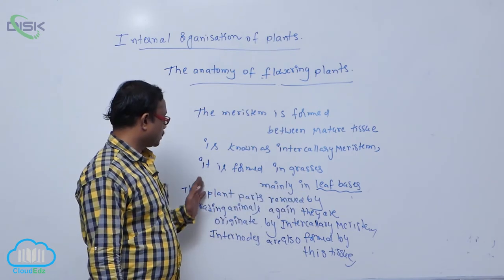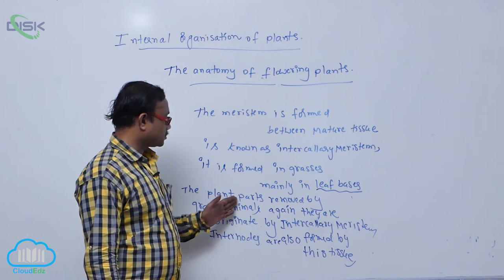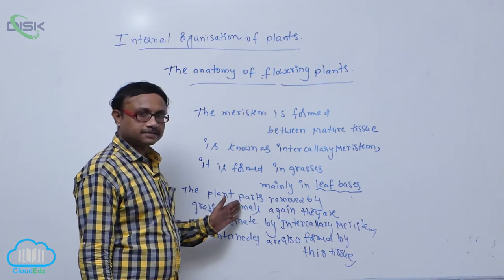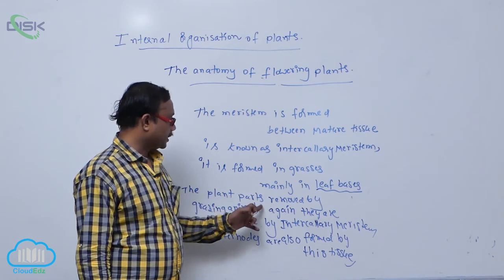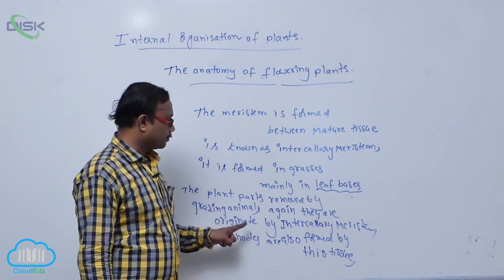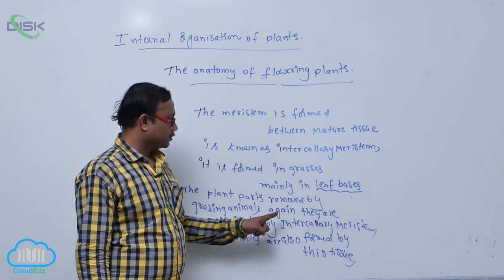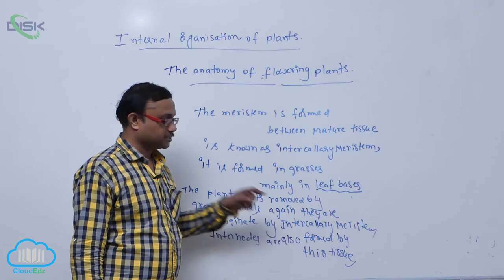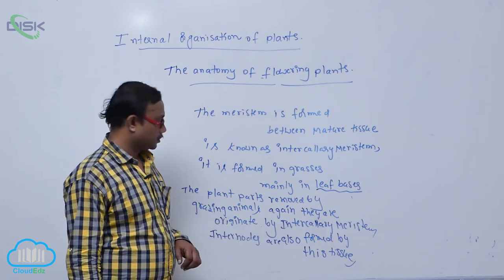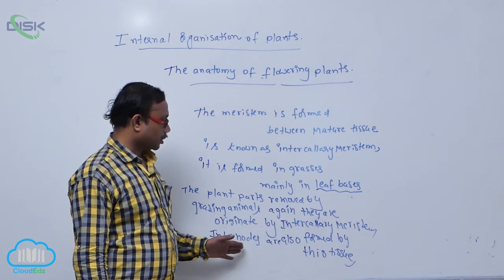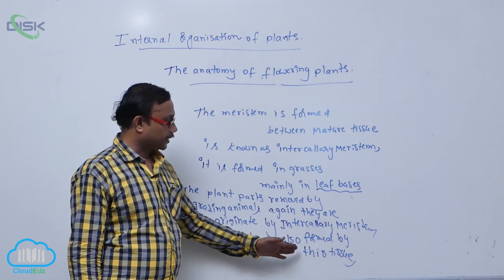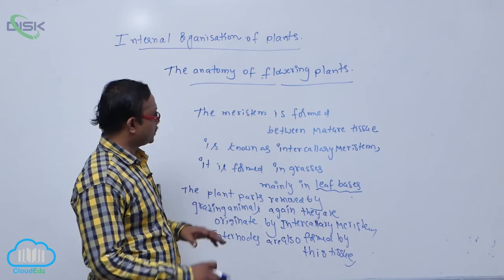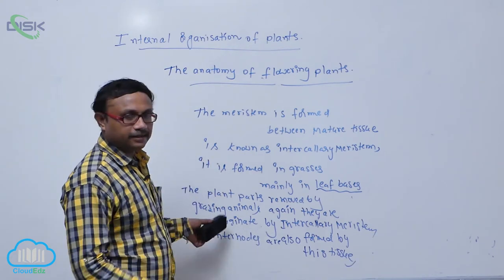The plant parts removed by grazing animals are again originated by intercalary meristem. Internodes are also formed by this tissue. That is known as intercalary meristem.